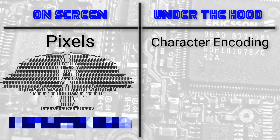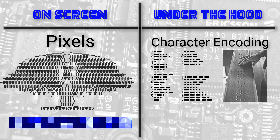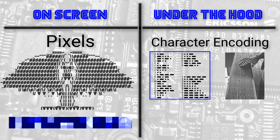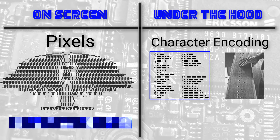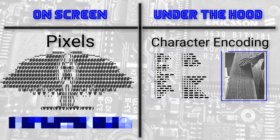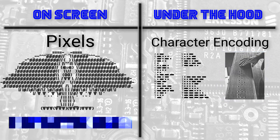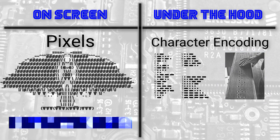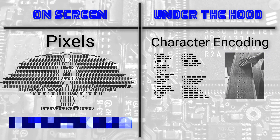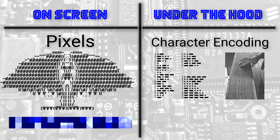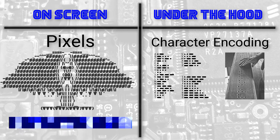A couple of examples you may have heard of are Morse code and braille. Morse code represents characters using sound or light, and braille represents characters using a physical medium. Something you may notice about both examples is how the different ways of referring to characters allow for different properties to be exploited.